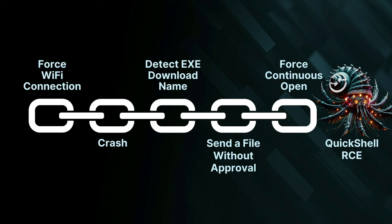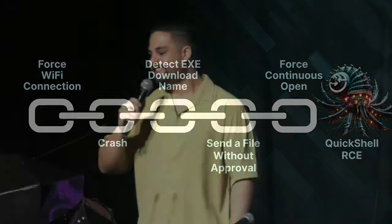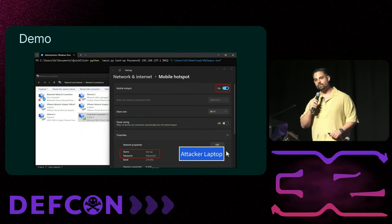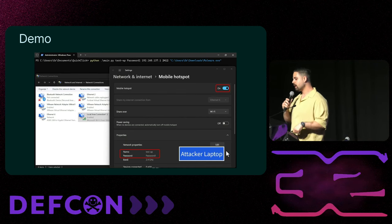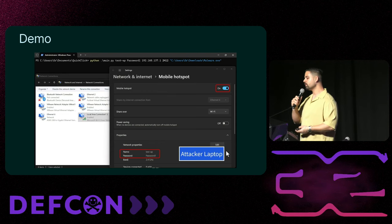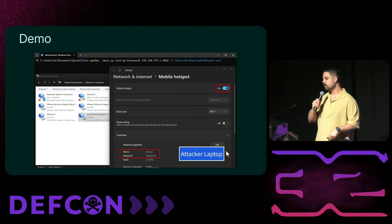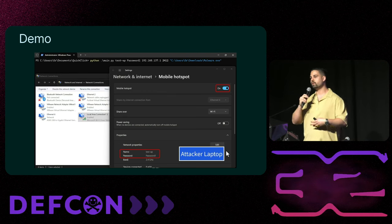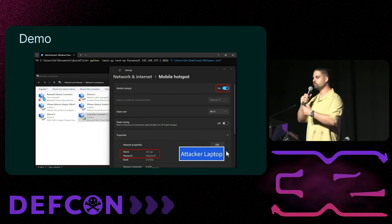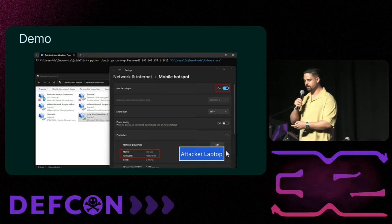Another two links were added to our RCE chain, completing it into the RCE attack chain we were aiming for from the beginning. We prepared a demonstration video presenting the entire QuickShare RCE attack chain. The video starts on the attacker's computer where the attacker has enabled a mobile hotspot, then moves to the victim's computer with QuickShare installed, showing how the attacker forces the victim into connecting to the Wi-Fi hotspot.